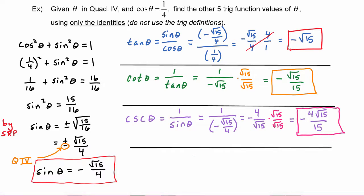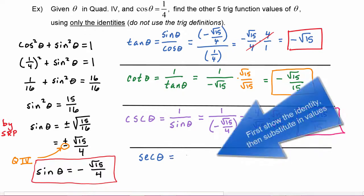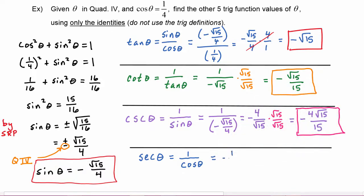Finally, secant of theta — we use the identity that secant equals one over cosine of theta. That gives us one divided by one fourth, which equals four.